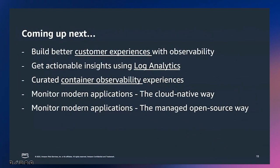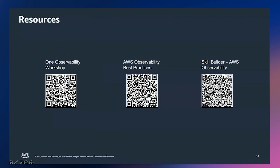I hope this session has given you an understanding of why observability is critical and how you should start building your strategy. In the next few sessions, you will learn how to use AWS Observability services for your key use cases — building better customer experiences, getting customer insights from logs, and building modern application observability using both cloud-native and open source tools. Resources available include the One Observability Workshop, a step-by-step workshop for learning AWS observability services; the AWS opinionated best practices guide; and a comprehensive AWS Skill Builder training course from our training and certification team.